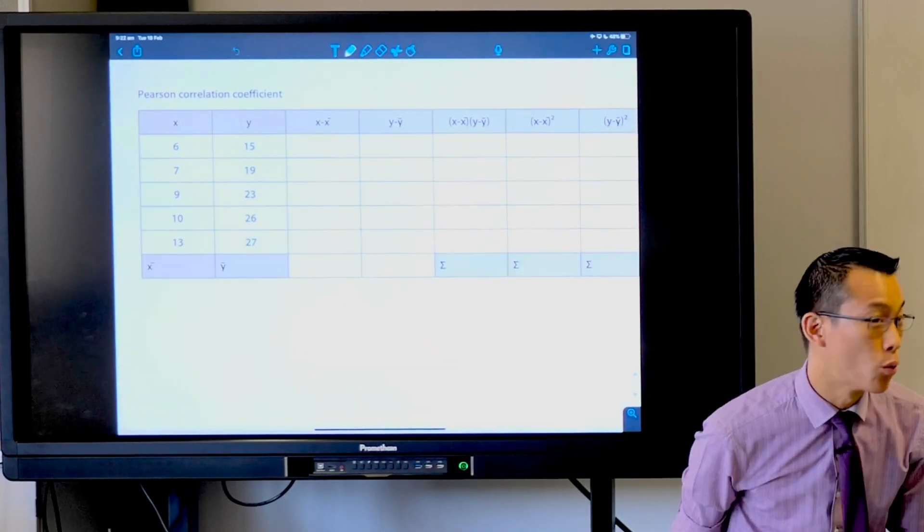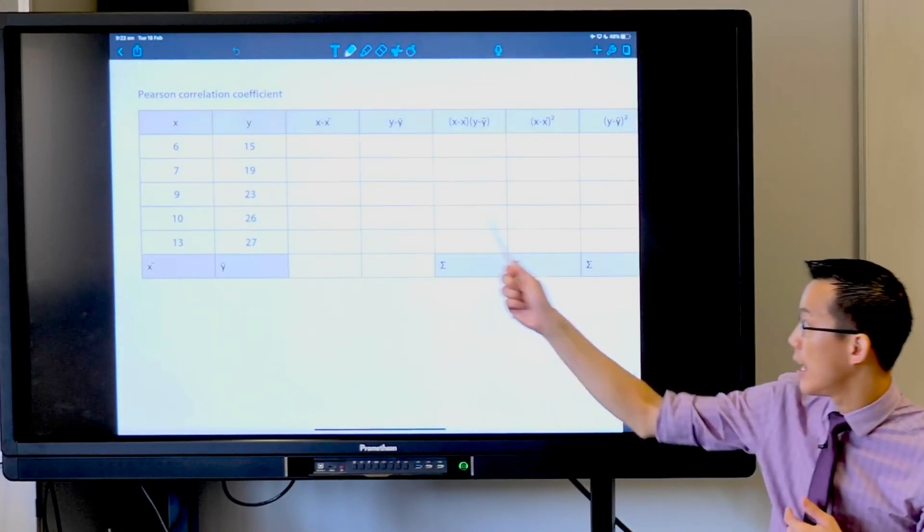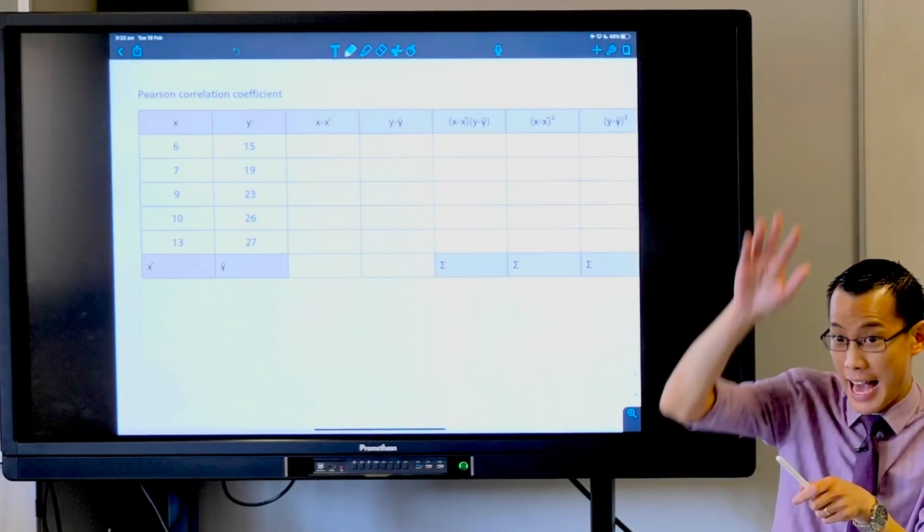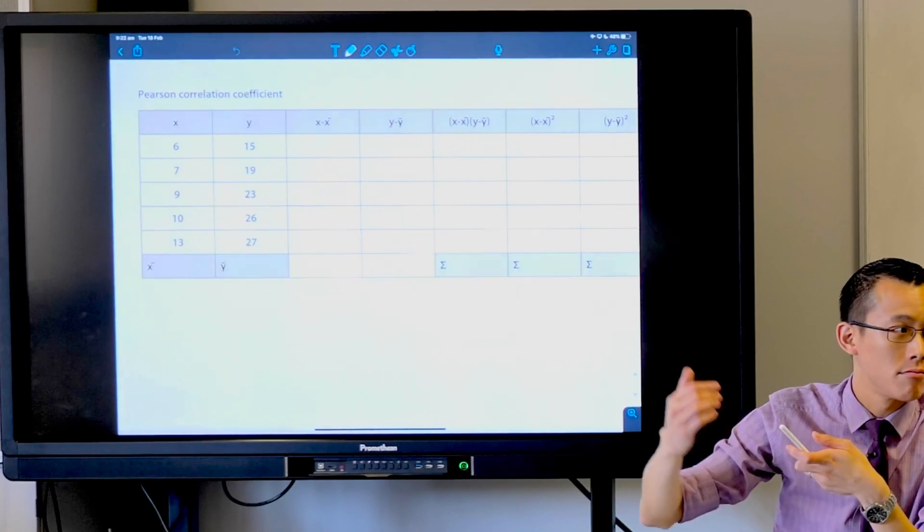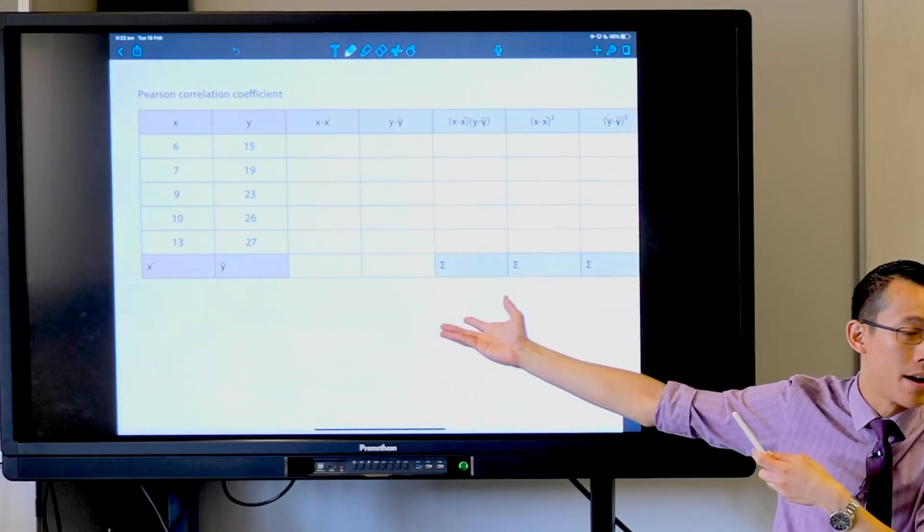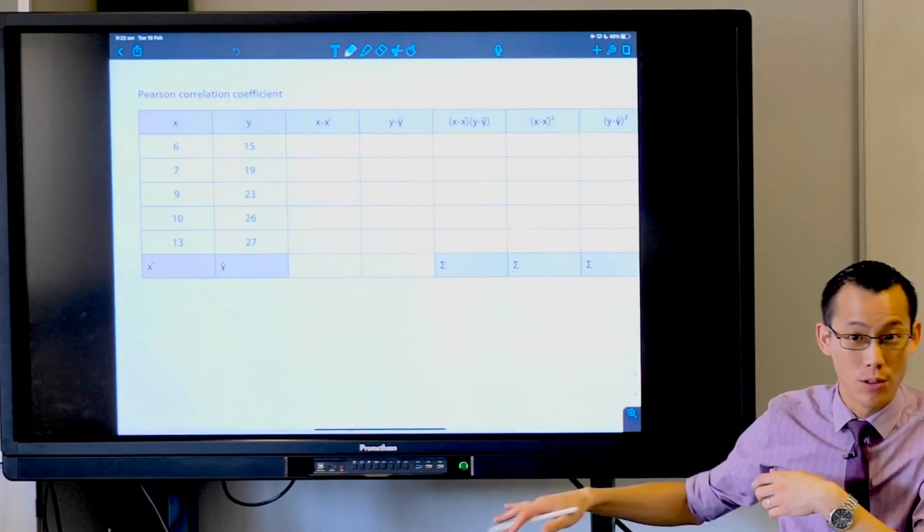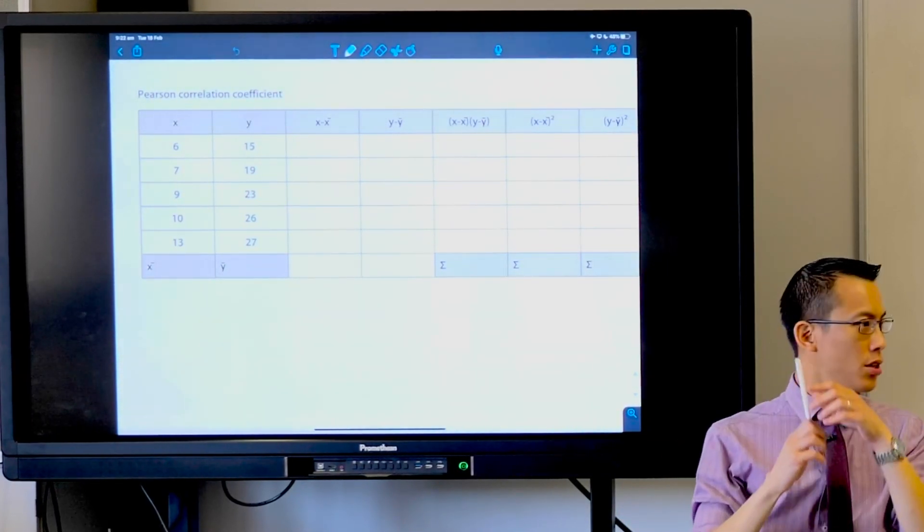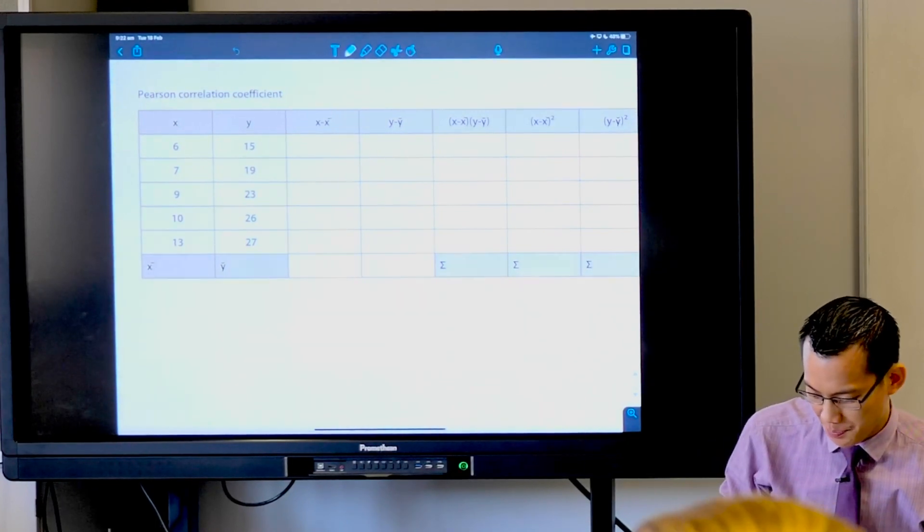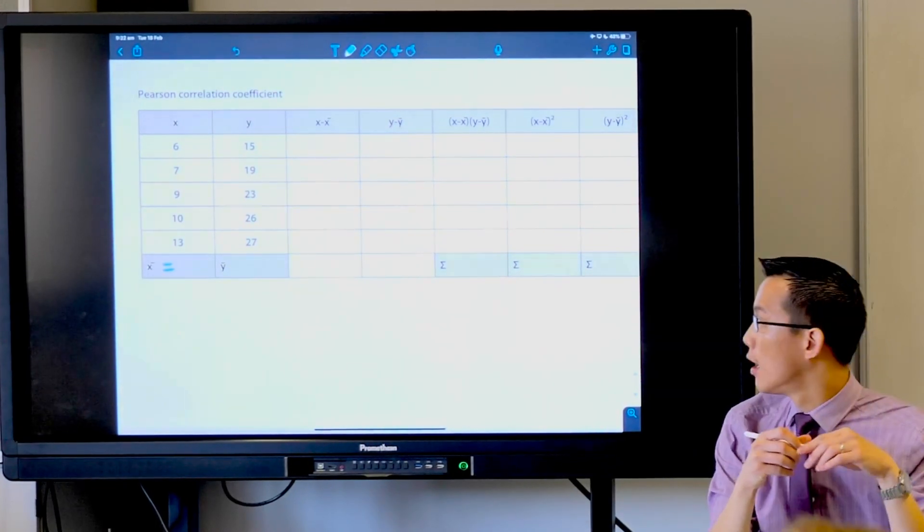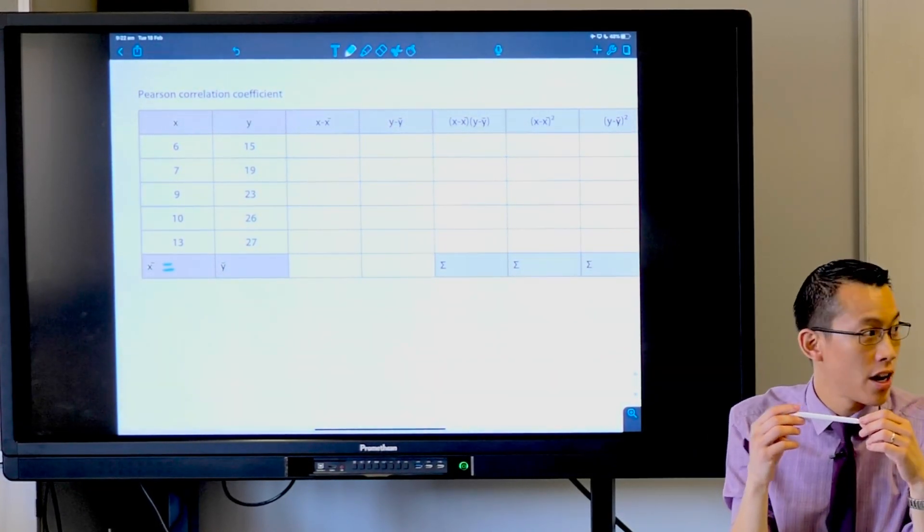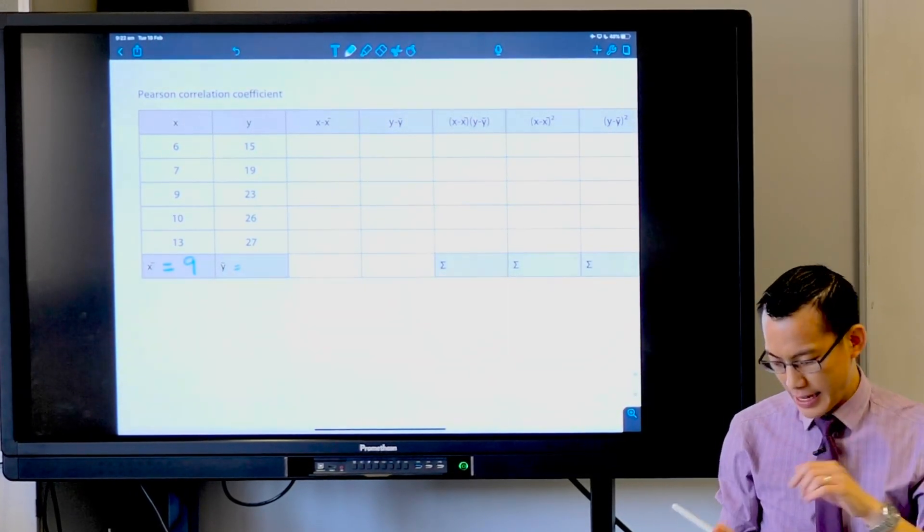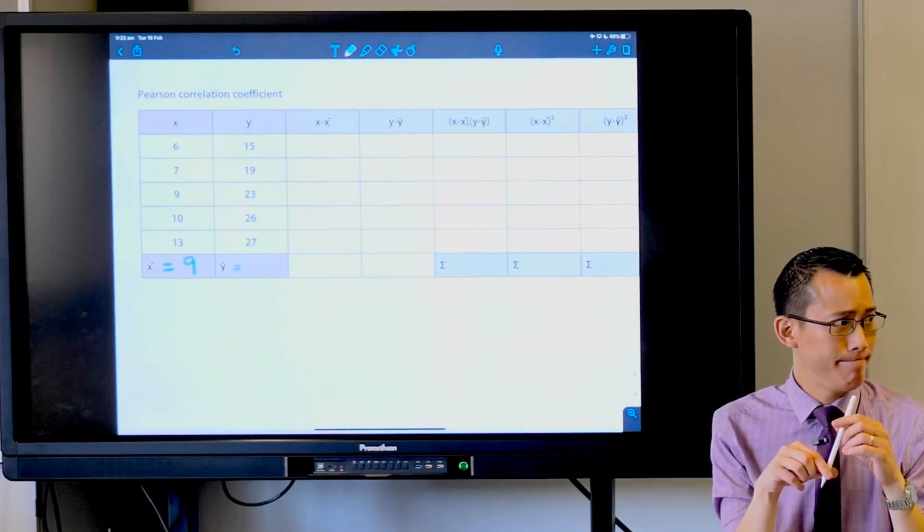I've given you five scores. Add up your x scores and divide by five. Then add up your y scores and divide by five. When someone gets x-bar, can they share it? Did we get nine? Excellent. And y-bar is twenty-two.